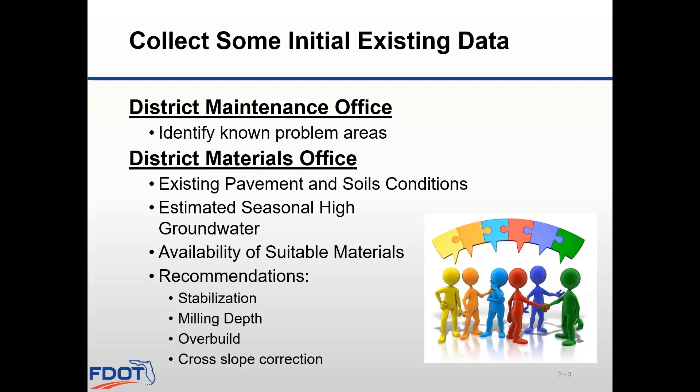The district materials office should be involved to determine the availability of suitable materials in the construction area and other special conditions that may exist. The geotechnical engineer should provide the estimated seasonal high groundwater data, which may impact your resilient modulus value. The district materials office can also provide recommendations with respect to stabilizing, milling, cross-slope correction, and existing pavement condition. The latest pavement evaluation coring and condition data can also be obtained from the district materials office.